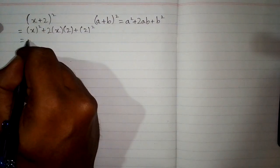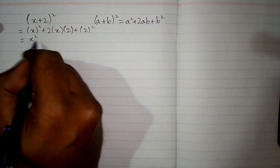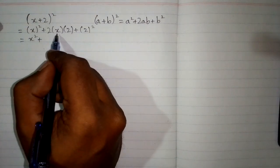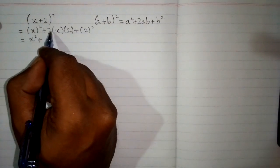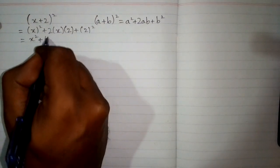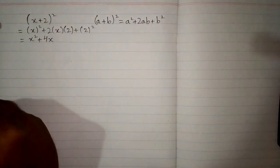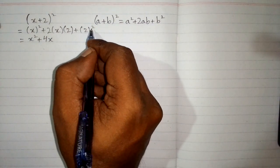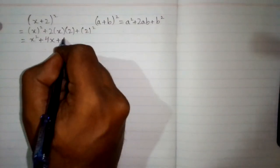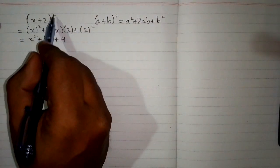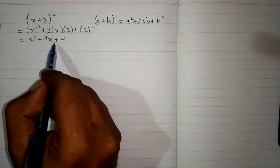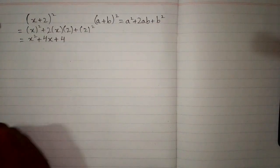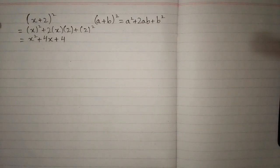Now x in place of x is x square and 2 times x times 2 means 2 times 2 is 4 with x and then plus 2 square. 2 square means 2 multiplied by 2. So we have 4, so x plus 2 whole square equals x square plus 4x plus 4 and this is the answer.